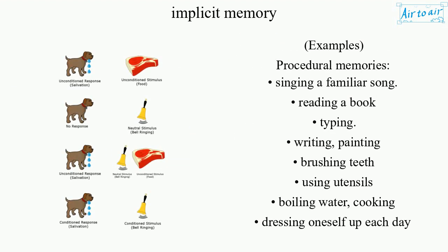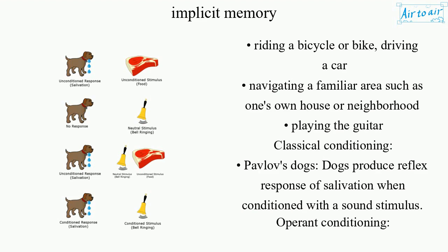Examples of procedural memories include: singing a familiar song, reading a book, typing, writing, painting, brushing teeth, using utensils, boiling water, cooking, dressing oneself up each day, riding a bicycle or bike, driving a car, navigating a familiar area such as one's own house or neighborhood, and playing the guitar.